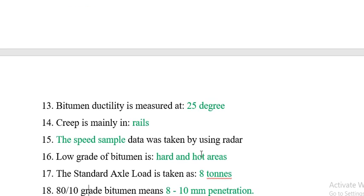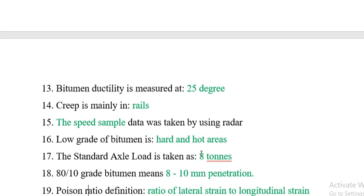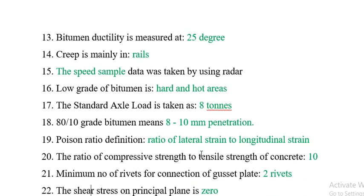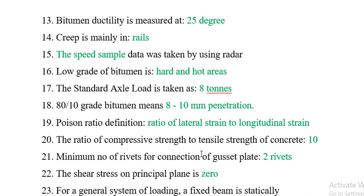Question 14: Creep is mainly found in rails. Question 15: Speed sample data was taken by using radar. Question 16: The low grade of bitumen is used in hard and hot areas.